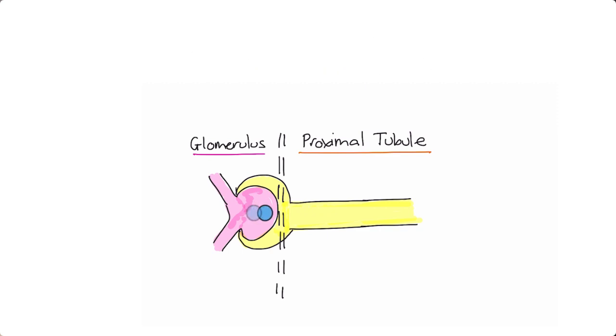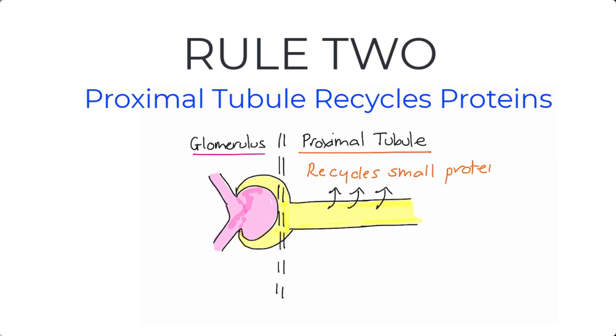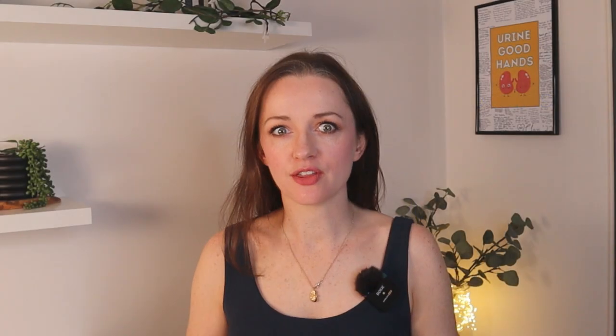But there are lots of other tiny proteins that can and do pass through the filtration barrier, which brings us to rule number two. The proximal tubule recycles small proteins in the filtrate. Proteins which are small enough to make it through the filtration barrier into the proximal tubule are meant to be there — they will be processed, recycled back into amino acids, and returned to the bloodstream. If you're unfamiliar with the proximal tubule, check out our video on Fanconi syndrome.